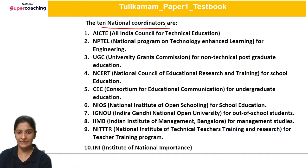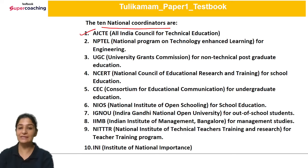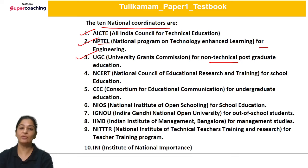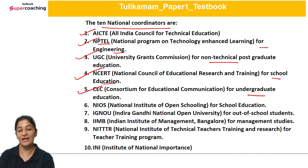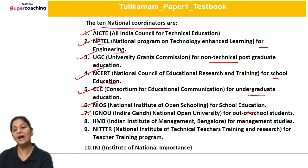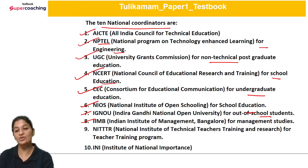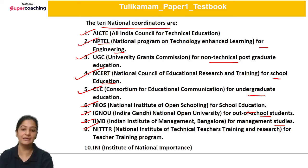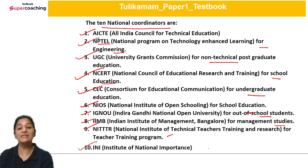We have 10 national coordinators. AICTE works for non-technical post-graduates. NPTEL works for engineering courses. NCERT works for school education. UGC works for undergraduate education. NIOS works for out-of-school education. IGNOU also works for out-of-school education. IIMB — a management institution from Bangalore — works for management studies courses. NITTTR works for technical teacher training. And the tenth coordinator is INI — Institute of National Importance — which is a new coordinator.